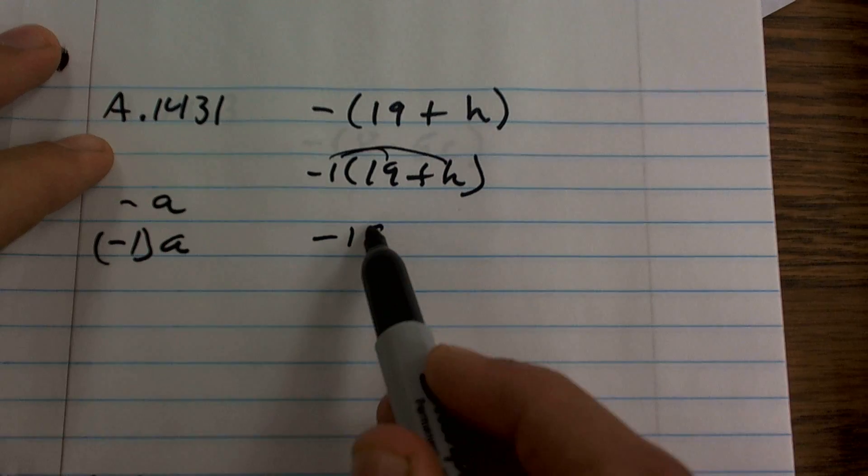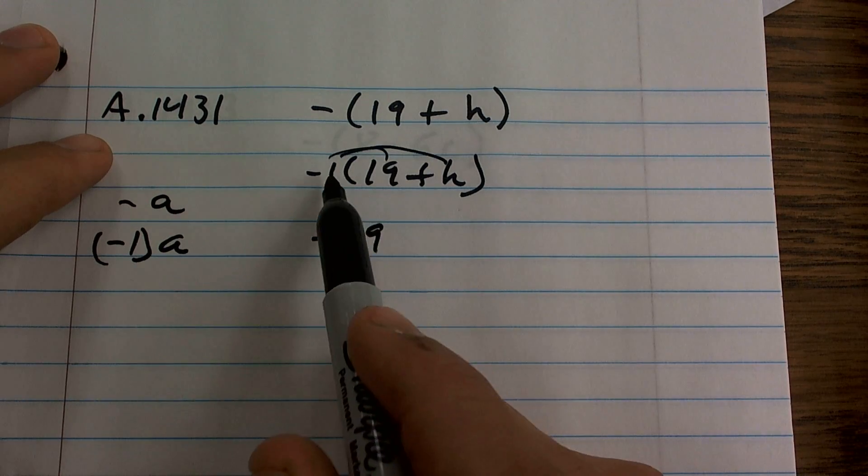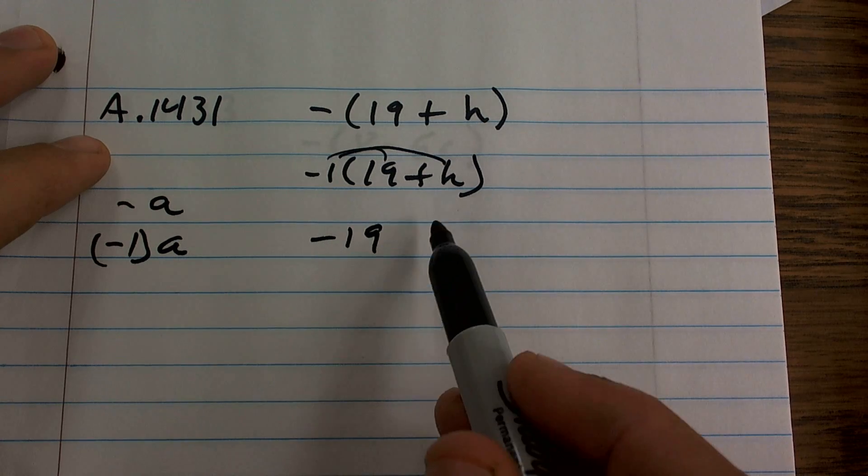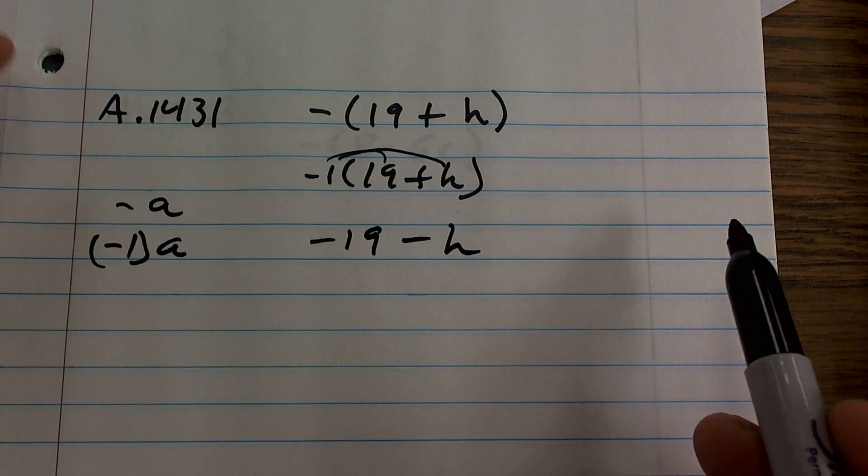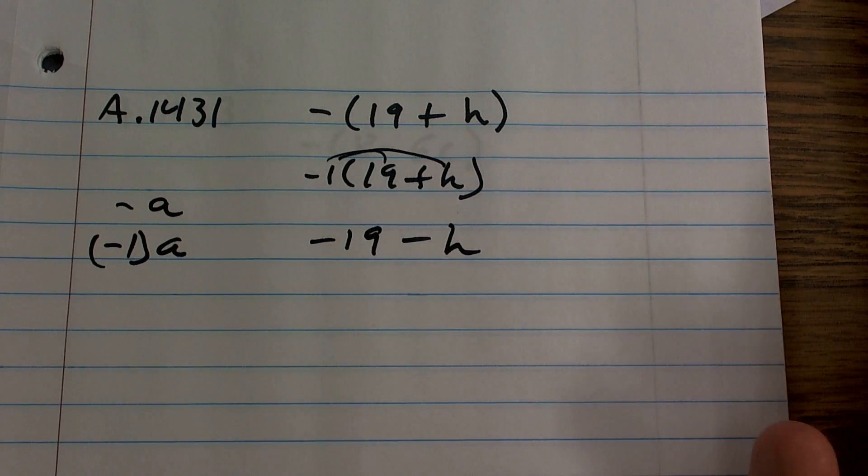Therefore, I have negative 19 and then negative 1 minus h. So negative 1 times h is going to be a negative h. So it's actually not that bad.